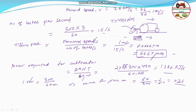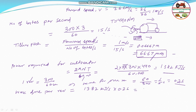Since the power is 13.82 kilojoule per second, the work done in 0.2 second — that is, one revolution — is 13.82 kilojoule per second multiplied by 0.2 second per revolution, which equals 2.765 kilojoule per revolution.